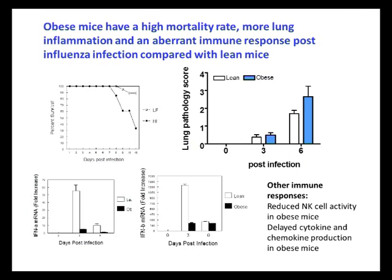Other immune dysfunctions that we noted in the infected obese mice included a reduction in natural killer cell activity and reduced or inappropriately released cytokines and chemokines. This study demonstrated what happens in a primary influenza infection in an obese animal.